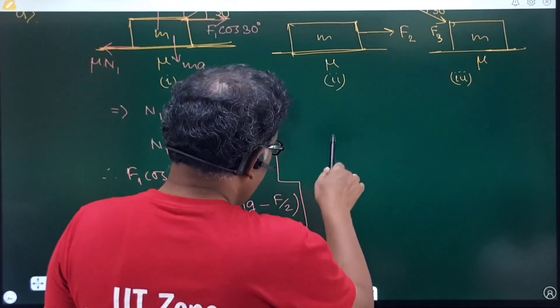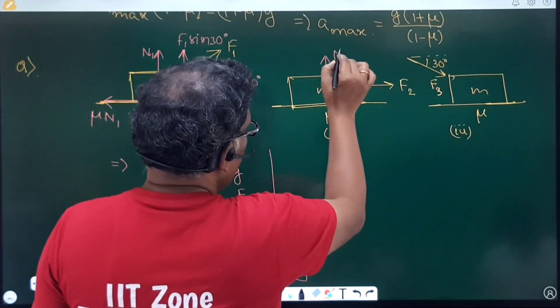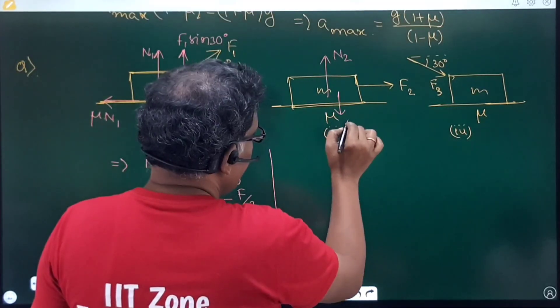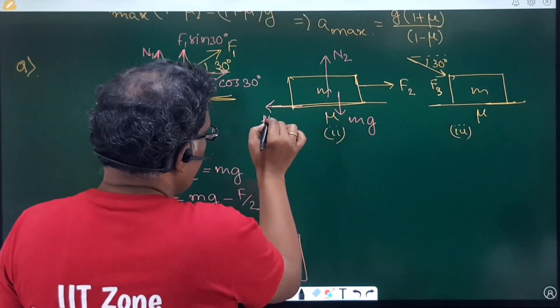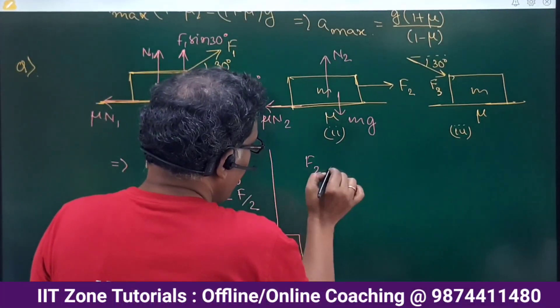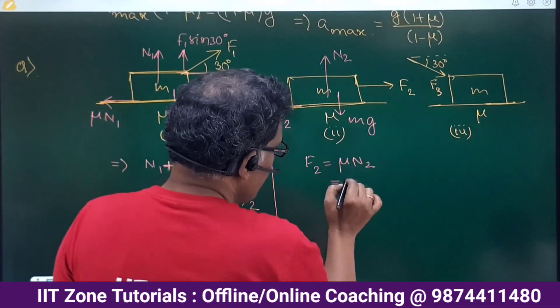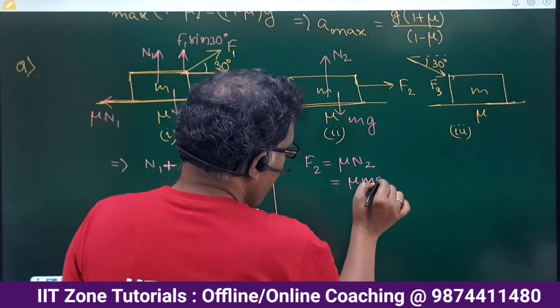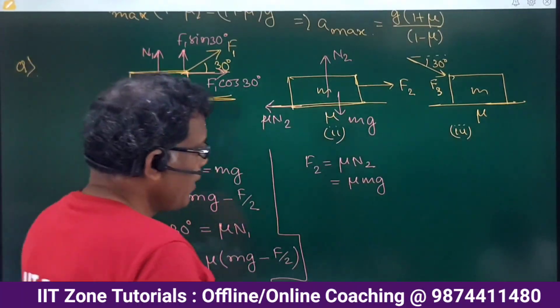In case number 2, in case number 2 straightway, the normal contact force N2 alone is equal to Mg. So, friction need to be mu into N2. So, in the second case, straightway F2 need to overcome mu N2 and that is equal to mu Mg. This is about the second case.